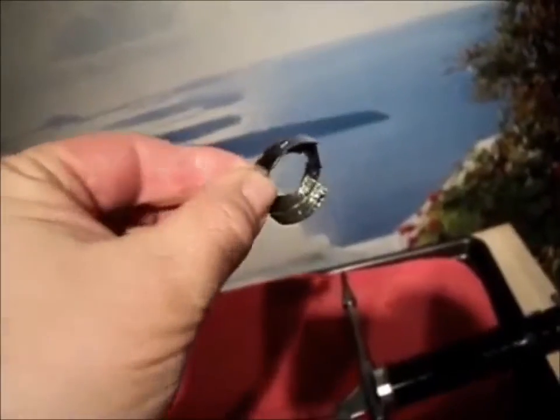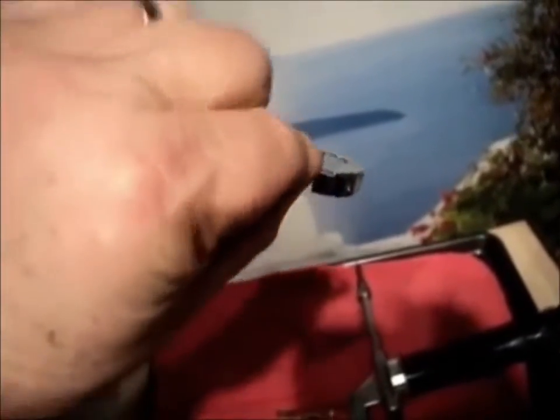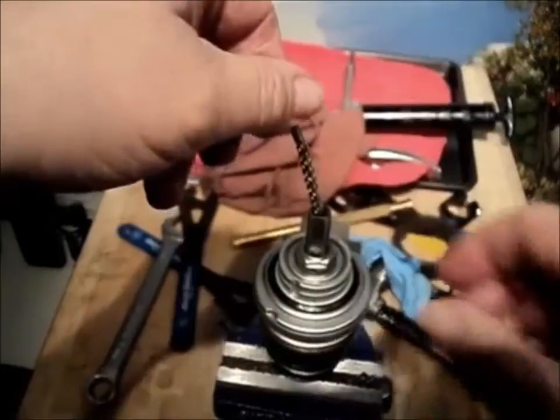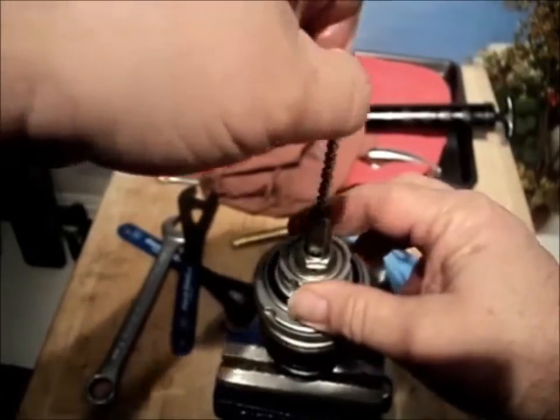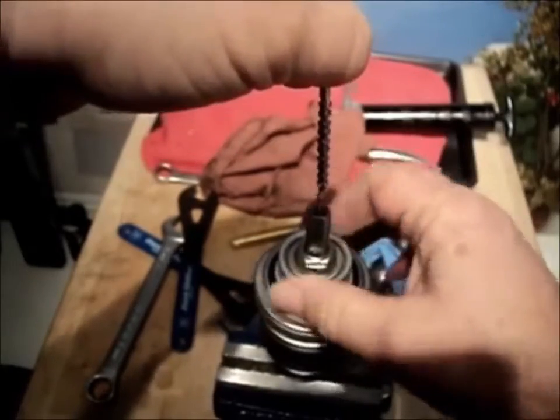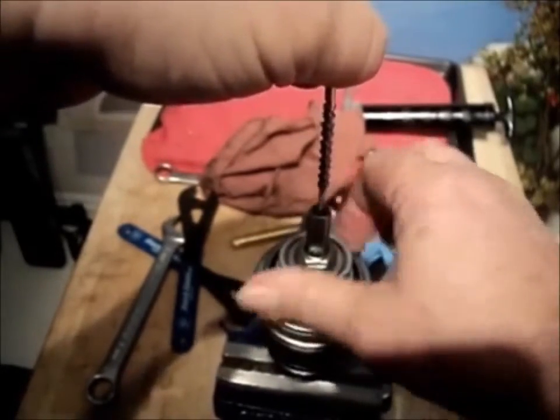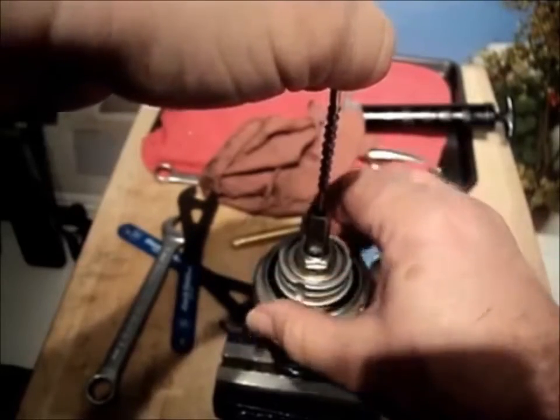The actuator plate is a stamped sheet metal part that fits on the output side of the driver. I've assembled this five-speed set of internals without the actuator plate in place. Let's watch what happens when we turn the driver backwards, simulating backpedaling.